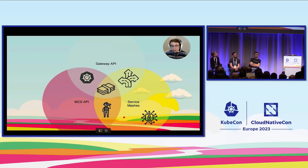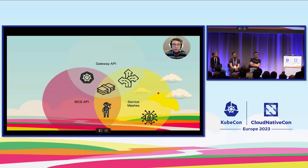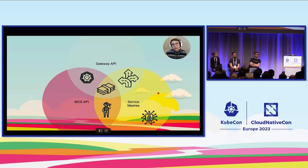MCS and Service Meshes are both very concerned with providing ways to discover a service, especially across cluster boundaries. The Gateway API and Service Meshes both do traffic shaping with different levels of expressibility and sophistication. Meanwhile, all the Service Meshes usually have a whole other suite of things they are able to independently do, like securing traffic, for example.